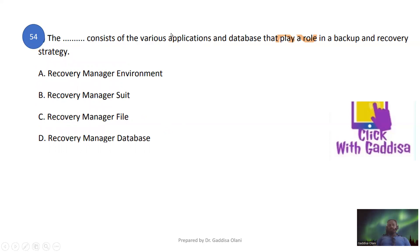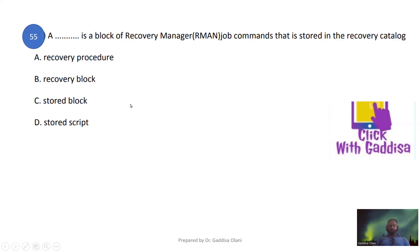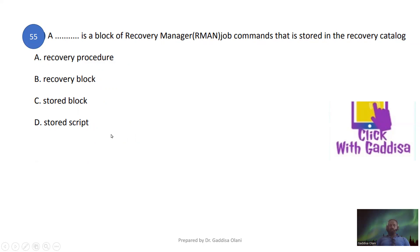RMAN consists of various applications in the database that play a role in backup and recovery strategy. RMAN is a block of the recovery manager — it uses job commands and recovery management commands, and data is stored in the recovery catalog.